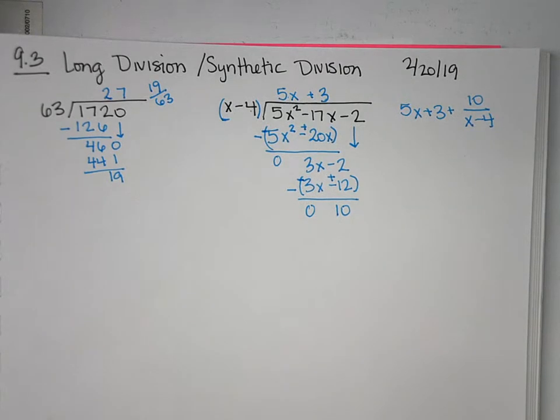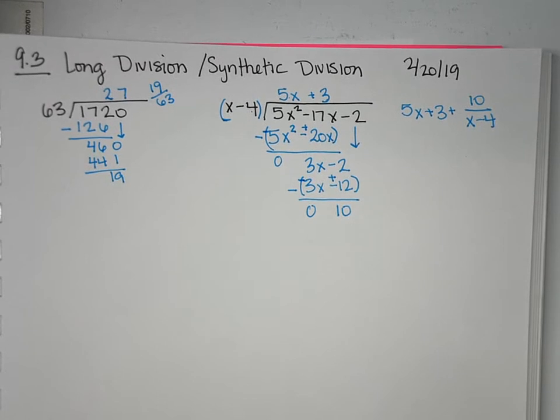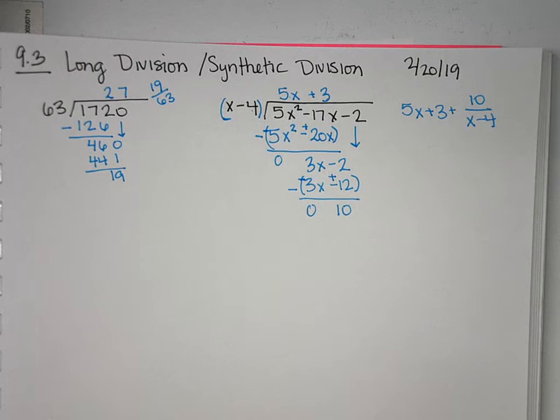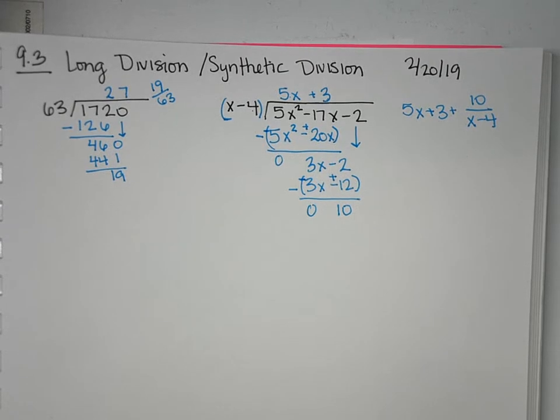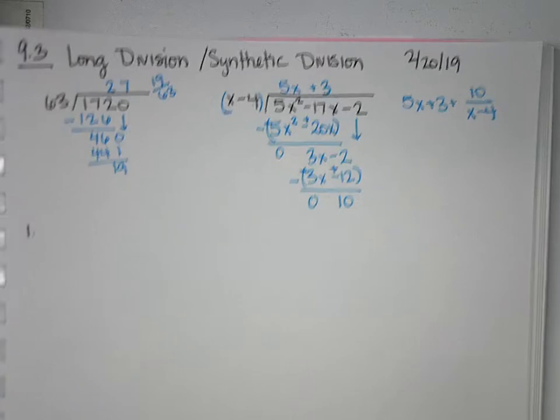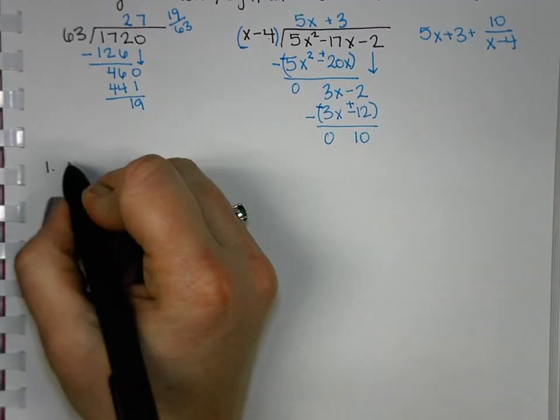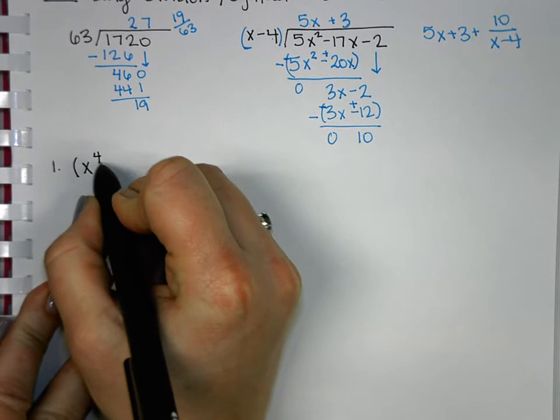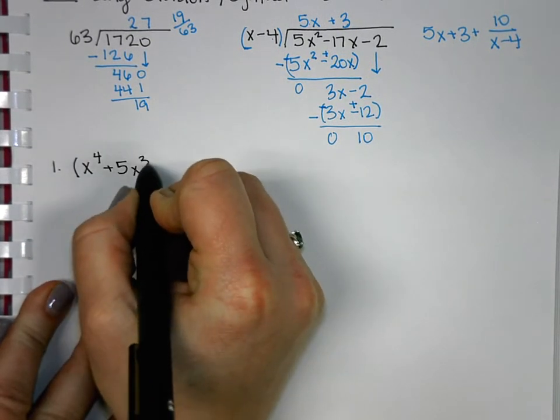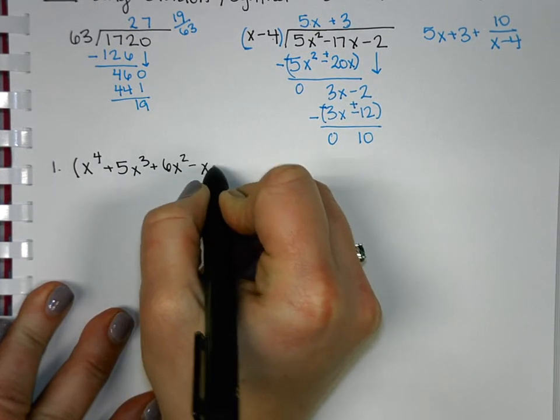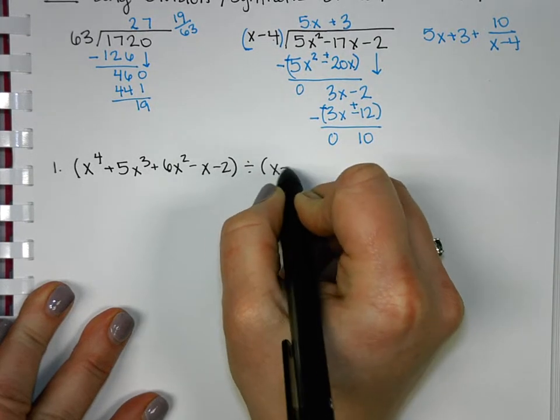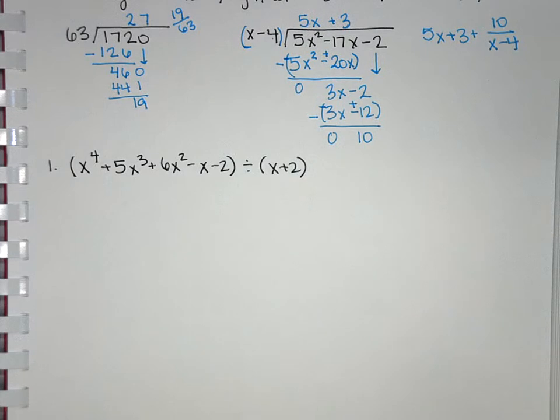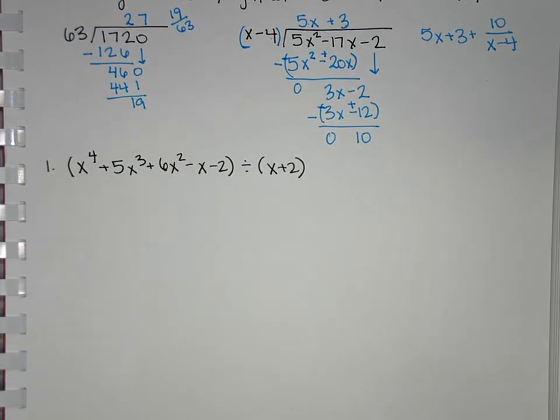Okay, so we're going to do one more where we use a slightly different type of polynomial. And then we'll go into synthetic division and how to tell when you can do long division and when you can do synthetic division. So we're going to do another long division. It's going to be given to us in a different way, though. So x to the 4th plus 5x to the 3rd plus 6x squared minus x minus 2 divided by x plus 2.